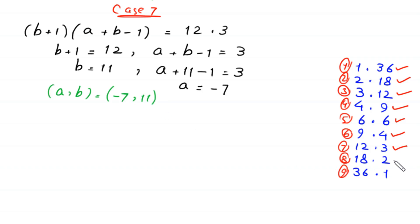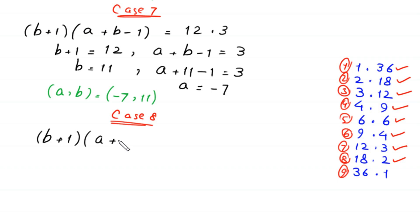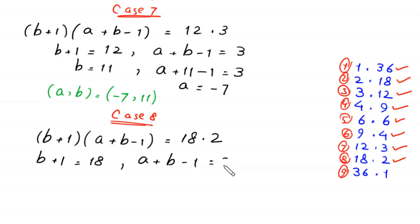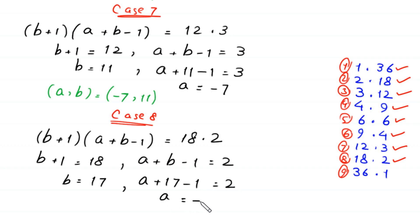In case 8, we set (b plus 1)(a plus b minus 1) equal to 18 times 2. So b plus 1 equals 18 and a plus b minus 1 equals 2. From here b equals 17, and substituting: a plus 17 minus 1 equals 2, so a equals negative 14. Eighth pair of solutions: (a, b) = (−14, 17).